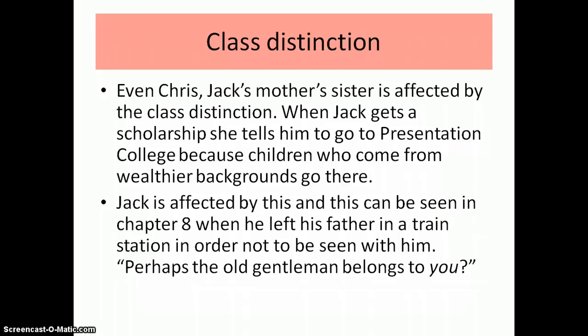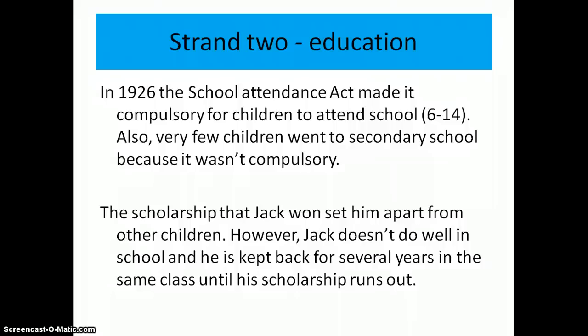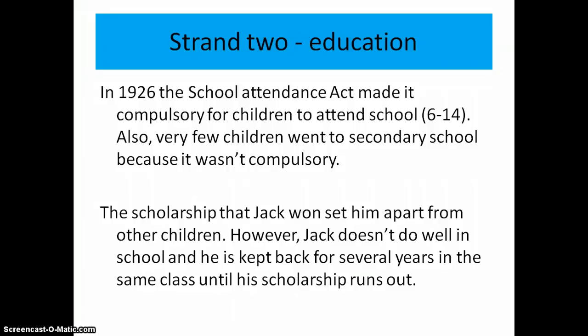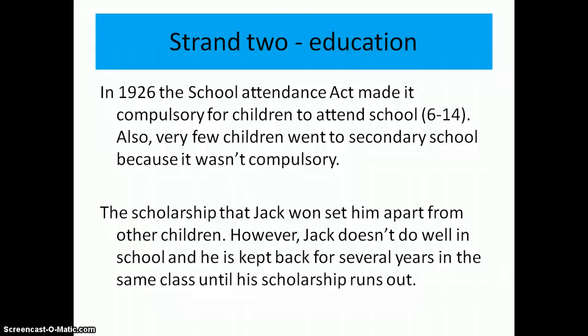The next strand I feel is very important in the novel is education, and it needs to be looked at in detail. In 1926 — the same year Jack was born — the School Attendance Act made it compulsory for children aged 6 to 14 to attend school. After age 14, you didn't need to do anything else and could begin working as an apprentice. Very few children went to secondary school because it wasn't compulsory. The scholarship Jack won set him apart, but he doesn't do well in school — he's kept back for several years, three years in fourth year, in the same class until his scholarship runs out.